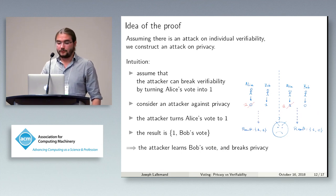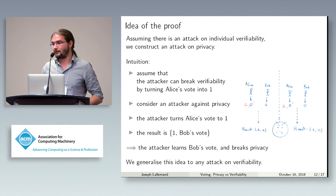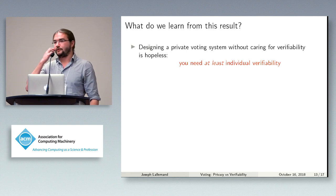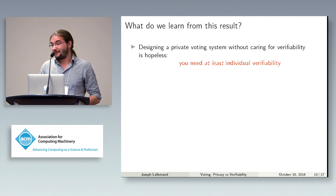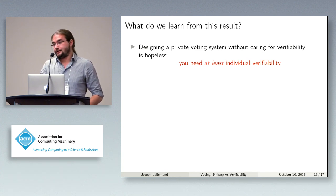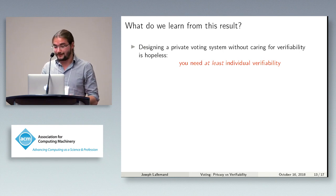That's the idea of our proof. Here I presented it in a simple case where we know precisely how the attacker breaks verifiability, but in the paper we generalize this idea to any attack on verifiability by writing a reduction between the two cryptographic games. What we get from this is that if you're trying to make a voting system and you want it to be private, you have to care for verifiability. You can't design a private voting system without caring at all for verifiability — you have to have at least individual verifiability. This means that the mechanisms for individual verifiability are also important for privacy: if you don't have them, you can't have privacy.